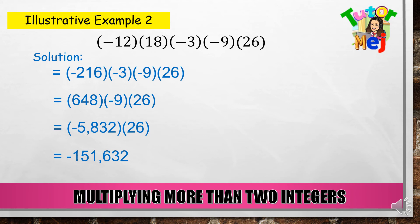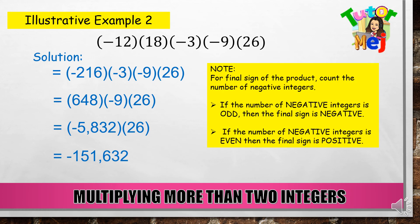Meron din isang pang teknik — pwedeng imultiply natin diretsyo: 12 times 18 times 3 times 9 times 26. Tapos bilangin ninyo kung ilan ang negative integers na involved. Dito, meron tayong negative 12, negative 3, at negative 9 — ibig sabihin, may tatlo. Ito ay odd number of negative integers. Pagka may odd number of negative integers tayo, ang result ay negative. At kung may even, ang result ay positive. So take note — for the final sign of the product, count the number of negative integers. If the number of negative integers is odd, then the final sign is negative. If the number of negative integers is even, then the final sign is positive.